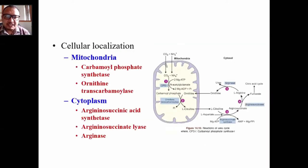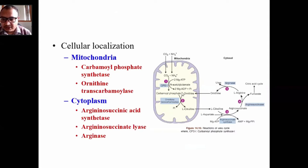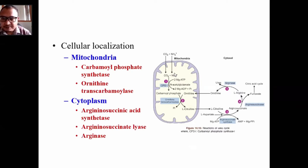Regarding cellular localization, among the five enzymes involved in the urea cycle, two enzymes — carbamoyl phosphate synthetase and ornithine transcarbamylase — are present in the mitochondria. The first two steps of the urea cycle take place in the mitochondria, and the remaining three steps take place in the cytosol. This is partly because glutamate dehydrogenase, which produces ammonia from glutamate, is also present in the mitochondria.